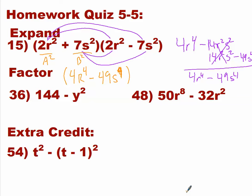What does it mean for factoring when you expand a difference of squares? The answer is going to be the a term squared minus the b term squared. Well, when we're factoring, let's take a look at this one. Factoring is doing the opposite of what you did for expanding. We have the expanded form and we want to turn it into the factored form. In a difference of squares, you will almost always have two terms.